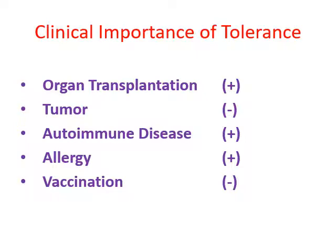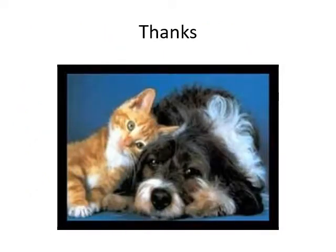In summary, immune tolerance is the non-responsiveness of our immune system against specific self antigen. It can be of two types: central tolerance and peripheral tolerance. B-cell self-tolerance is induced in bone marrow; T-cell self-tolerance is induced in the thymus. Some cells escape central tolerance, so there are mechanisms by which tolerance is induced in peripheral lymphoid tissue. Immune tolerance is very important for understanding the basis of autoimmune disease.